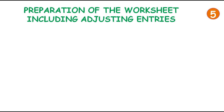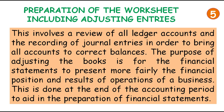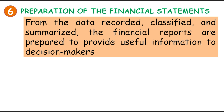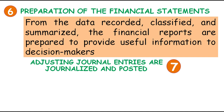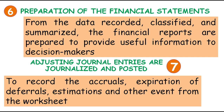Step five: preparation of the worksheet including adjusting entries. This involves a review of all ledger accounts and the recording of journal entries in order to bring all accounts to correct balances. The purpose of adjusting the books is for the financial statements to present more fairly the financial position and results of operations of a business. This is done at the end of the accounting period to aid in the preparation of financial statements. Step six: preparation of the financial statements. From the data recorded, classified, and summarized, financial reports are prepared to provide useful information to decision makers. Step seven: adjusting journal entries are journalized and posted. The purpose is to record the accruals, expiration of deferrals, estimations, and other events from the worksheet.